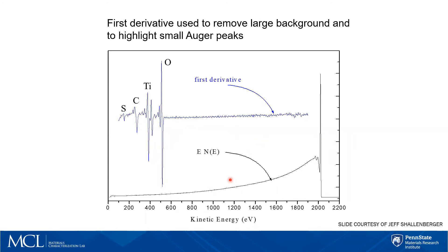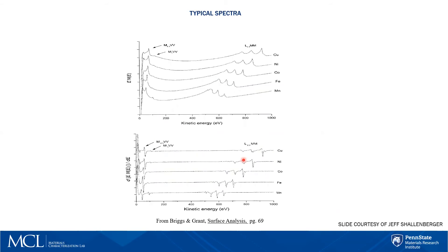The easiest way to remove the background is to take the first derivative of that spectrum. If we take the first derivative of this distribution, we get the spectrum in blue where our elemental peaks jump out at us with a lot more definition. The peak to background ratio in this derivative spectrum is much higher than it is in the raw spectrum, and the derivative has very nicely removed the large, slowly varying background. Every element has its own characteristic set of Auger peaks, and that's how we use the technique for elemental analysis.